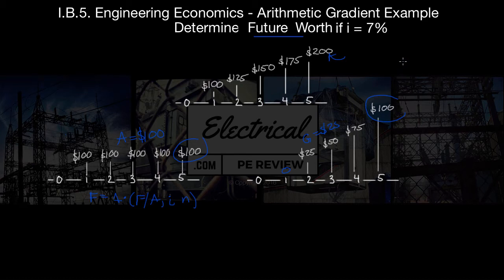One equation gives us for gradients: We've got P, present worth, equals present worth given our gradient. We have another one that gives us our future worth, F, from a present worth value, F equals F over P. So if we use our value here as our present worth, we can find the future worth of our gradient.